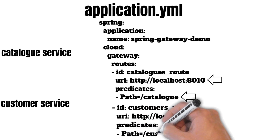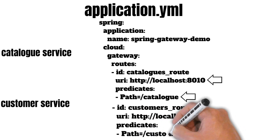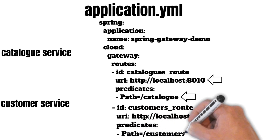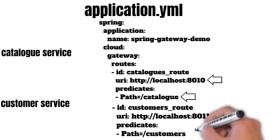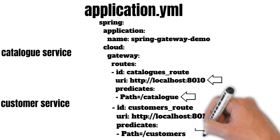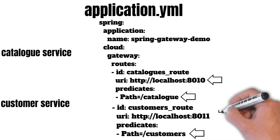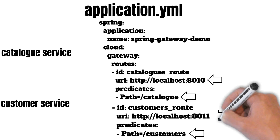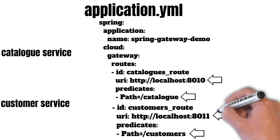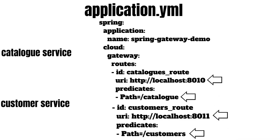So again, whenever a request for '/customers' comes to the API gateway, it will be redirected to localhost 8011, which is the customer service running in its own container.